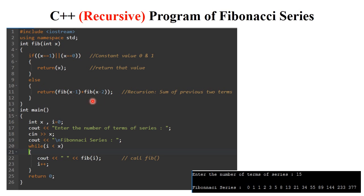This is called recursion — function calling itself. This is the C++ recursive program of Fibonacci series. After execution it goes back and prints each and every number in the Fibonacci series.